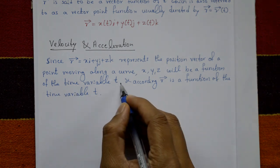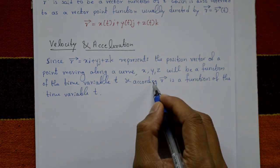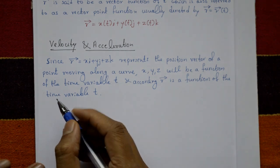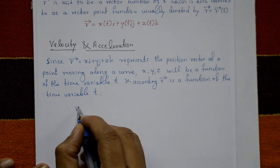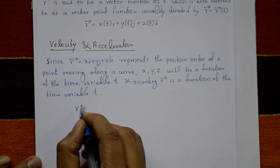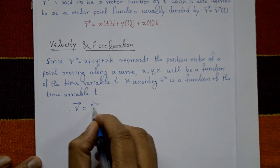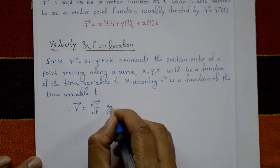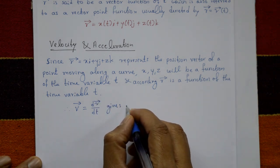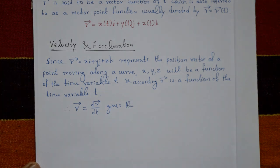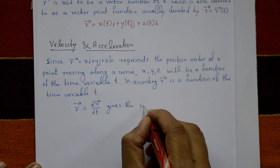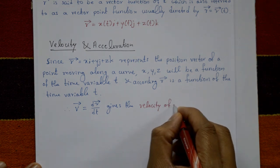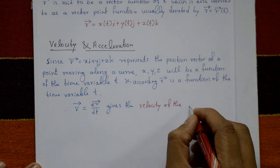Now v is the velocity. dr/dt gives the velocity of the particle at time t. So v = dr/dt is the velocity of the particle at time t.